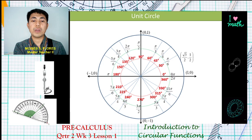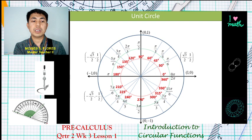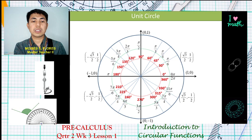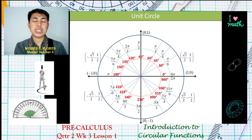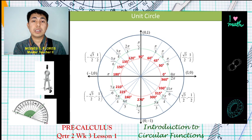For 30 degrees, the coordinates are (√3/2, 1/2). Reflecting to the other quadrants, it's just a matter of changing the signs of either the y or your x values. The coordinates (√3/2, 1/2) appear in all four quadrants with appropriate sign changes.